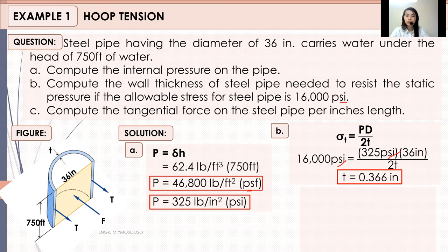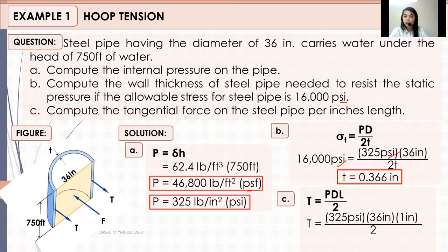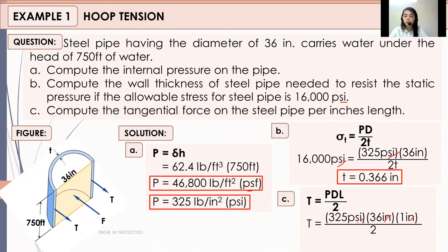For part (c), compute the tangential force per inch length. As derived, the formula for tensile or tangential force is pd·l over 2. So: T equals 325 psi times 36 inches times 1 inch (representing one strip length). The 1 inch represents one strip of the steel pipe. Canceling units, the tangential force equals 5,850 pounds.